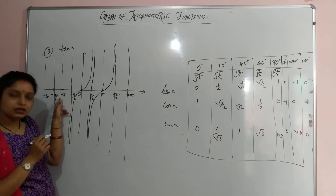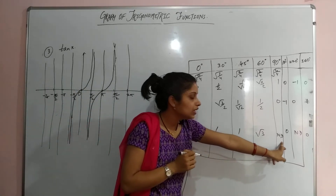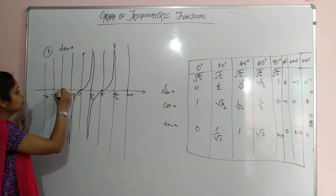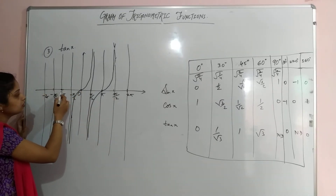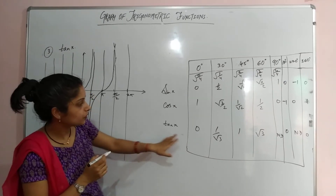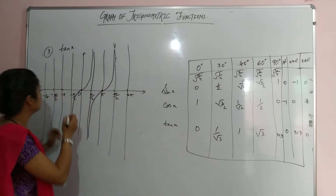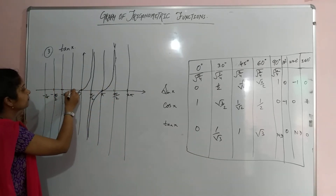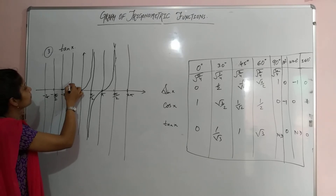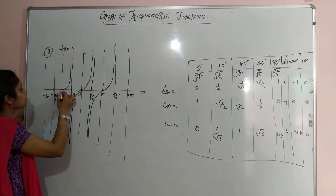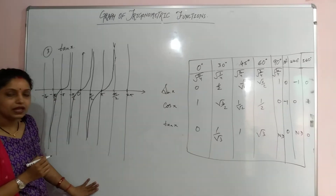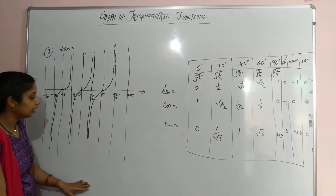On the negative side, at −π/2 tan is again not defined, tending towards negative infinity. In this way you can draw the complete graph of tan x, with repeating branches separated by vertical asymptotes.